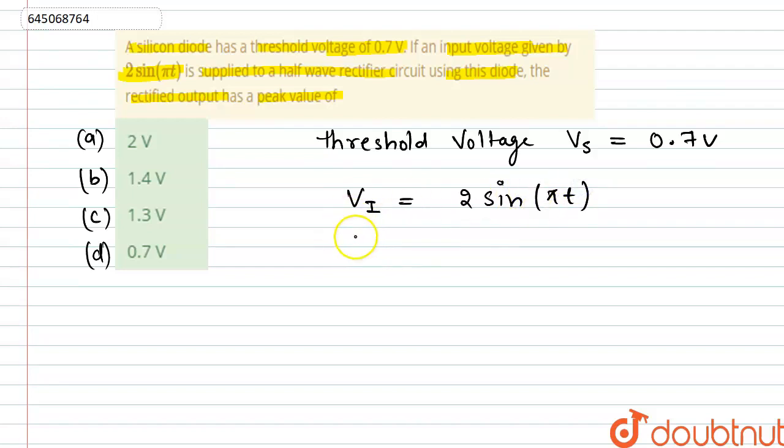So if we compare this with the general equation which is V equals V0 sin omega t, where V0 is the peak value of voltage, we can write that peak value of input voltage is 2.